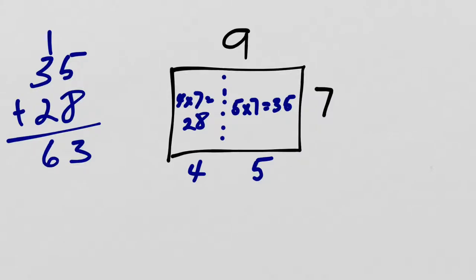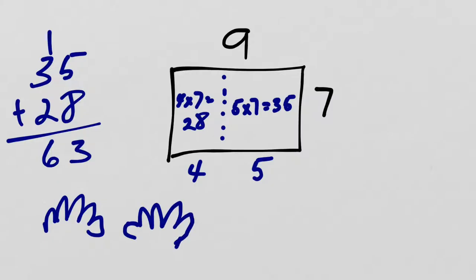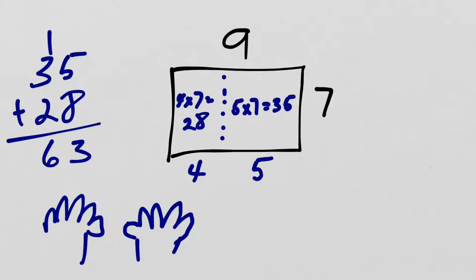You can check that with the finger trick. I'm doing 9 times 7, so I count up to 7 and put finger 7 down. Then count: 10, 20, 30, 40, 50, 60, 61, 62, 63. It matches. Always a good idea to check another way to see if your work matches up.